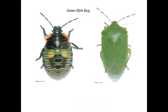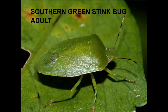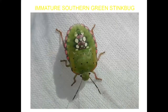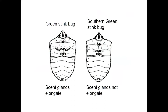The immature stage of the green stink bug has orange shoulders. There's the southern green stink bug adult, and the immature stage of the southern green stink bug has a pink margin that separates it from the green stink bug immature. If you look at green and southern green stink bugs, you'll notice that the scent glands are elongated on the green stink bug, and they're not as elongated on the southern green stink bug.